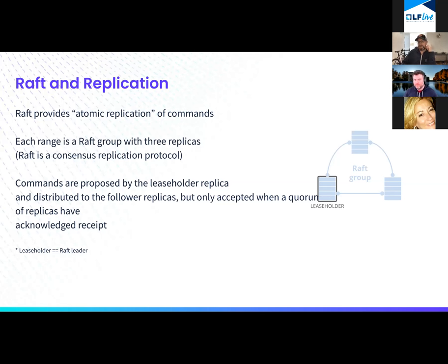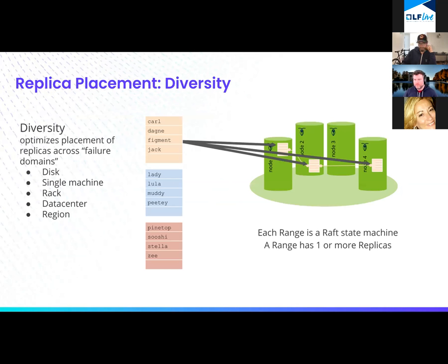When we place data within a cluster, someone was asking how you distribute data. If I have four nodes and want to take a table and distribute replicas of the ranges within it — ultimately underneath the covers in CockroachDB, every table is broken down into 256-megabyte chunks of data. That allows us to move data around and create these replica sets. You can think of these as shards, but we automate all of that.